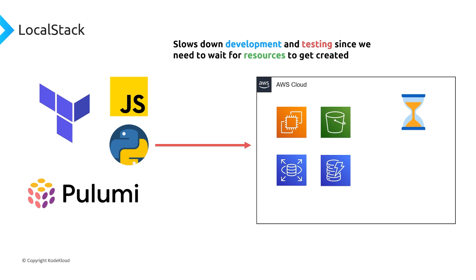On top of that, since we're creating actual resources in AWS, they're going to incur a charge. This is problematic because we don't want to continuously pay for resources we're not really using — we just want to test our code. This is especially true in a continuous integration environment, where you have to run automated tests in a short period of time. It's very hard to interact with AWS because you have to wait for all of those things to get created and then subsequently destroyed afterwards.